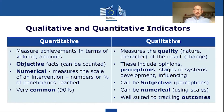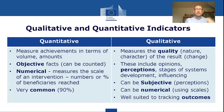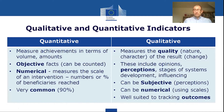Another way in which we can categorise indicators are qualitative and quantitative indicators. Quantitative indicators are things you can count — these measure achievements in terms of volumes or amounts. They are objective facts, they are numerical, so they're often measures on a scale, typically numbers or percentages, and they're very common.